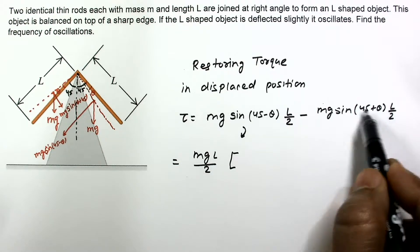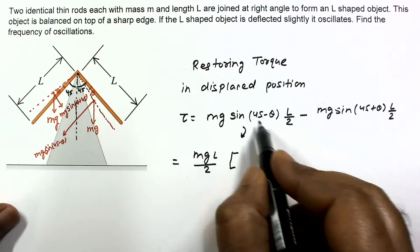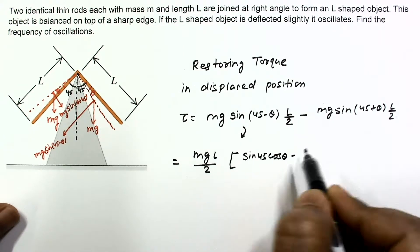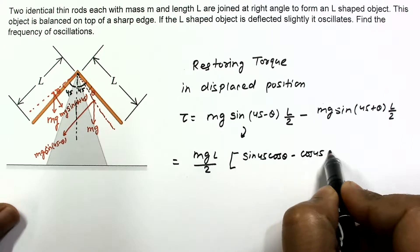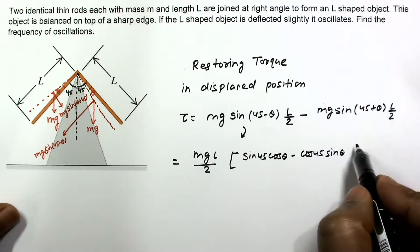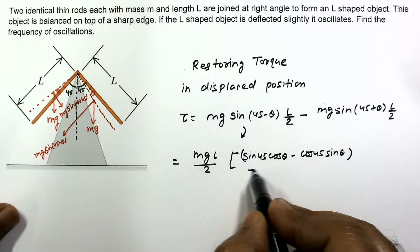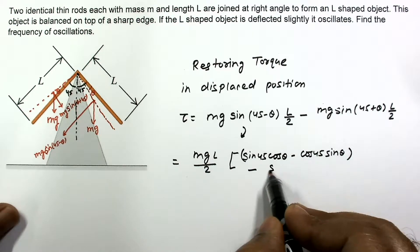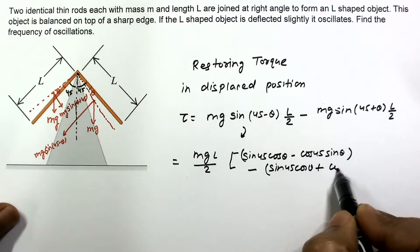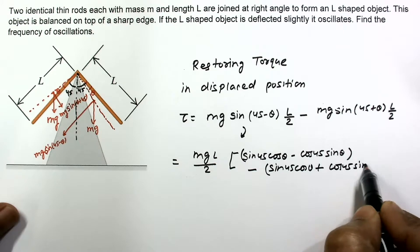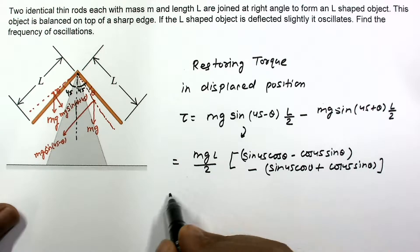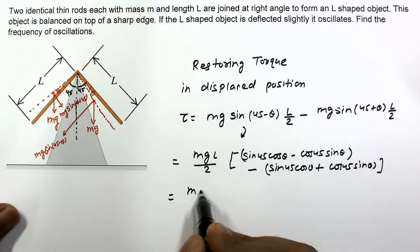Expanding using the formula sin(A ± B): sin(45 − θ) = sin45·cosθ − cos45·sinθ, and sin(45 + θ) = sin45·cosθ + cos45·sinθ. Since sin45 and cos45 are both equal to 1/√2, that common factor comes out.